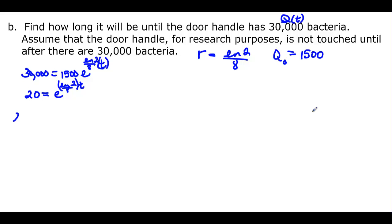And natural log, you're right, natural log of 20 is equal to ln 2 over 8 t times ln e, which is just 1. So we have finally ln 20 divided by ln 2 divided by 8, and that will be equal to our t.